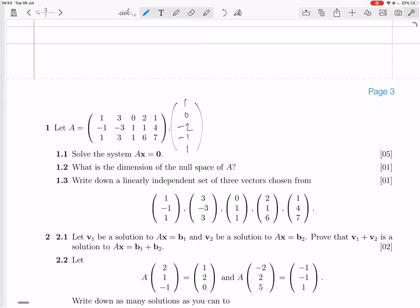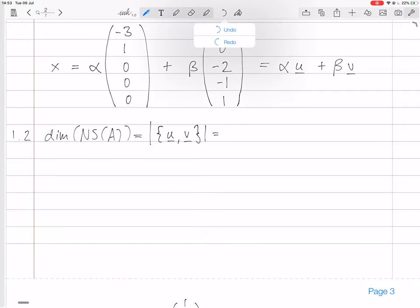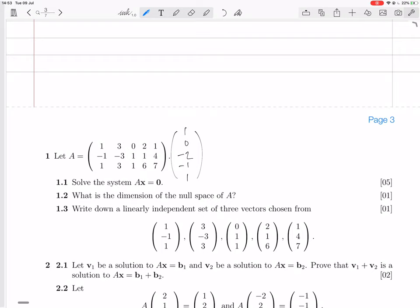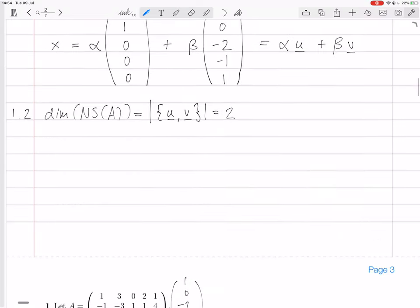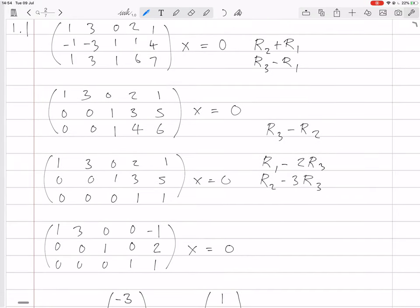1.3. Write down a linearly independent set of three vectors chosen from these things, which are exactly the columns of A. So you want linearly independent vectors. You want to take a linear combination of these things, set it equal to zero, and then you want three vectors from here which when you take a linear combination of them, set it equal to zero, the only solution is the trivial solution. So to find the solution, you would Gauss-reduce. But we already Gauss-reduced all five of these columns together.